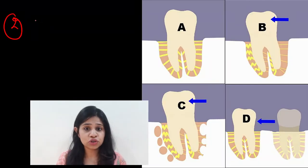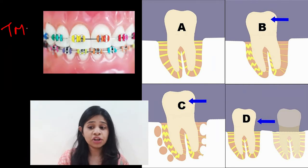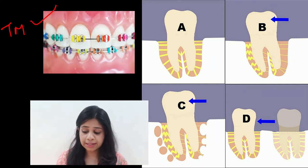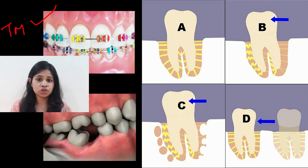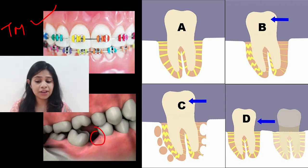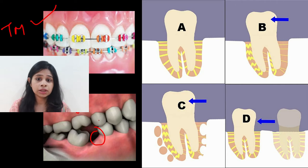The next function of cementum is adaptation and reshaping of the root surface during tooth movement. Tooth movement can occur due to orthodontic forces — an induced type of movement wherein we intentionally move teeth from one position to another. The second type is not induced; it occurs naturally due to changes in the local environment. For example, if we extract a lower first molar, the second molar will move mesially and the upper molar will supra-erupt into that space — a type of pathologic migration.